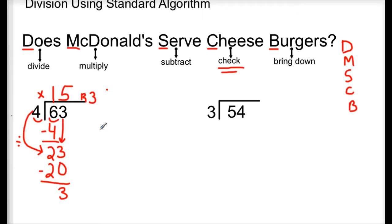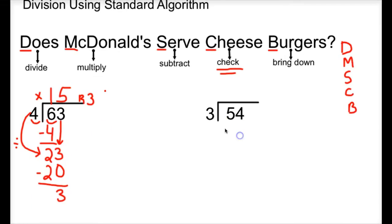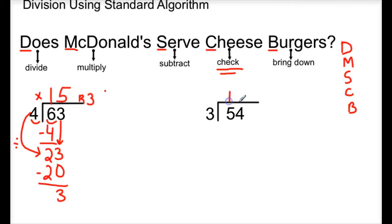That is the process for doing standard algorithm with division. We're going to try a few more because it definitely takes practice to become proficient using the standard algorithm. Let's look at 54 divided by 3. We are going to do the same thing, looking at the dividend and the divisor. We need to look at the 3 and the 5. How many times can 3 go into 5, or what number times 3 gets us close to 5 but we can't go over 5? That's going to be 1, and we need to place the 1 over the 5 in the tens place. Then we multiply: 3 times 1 is 3. Next step is subtract: 5 minus 3 is 2.